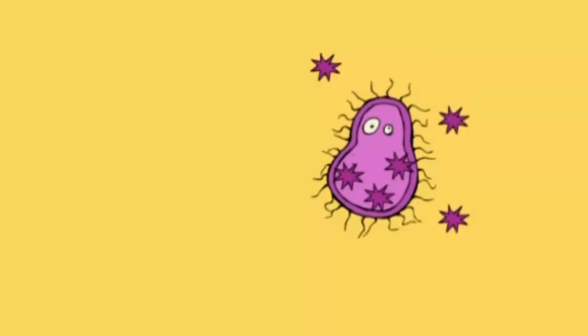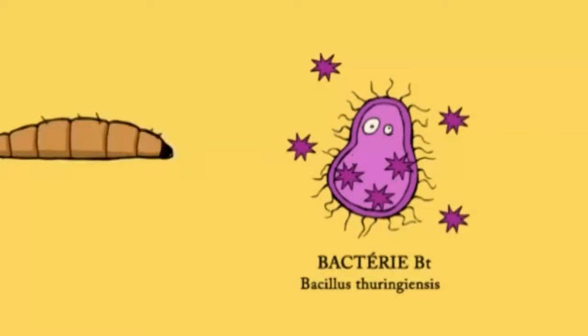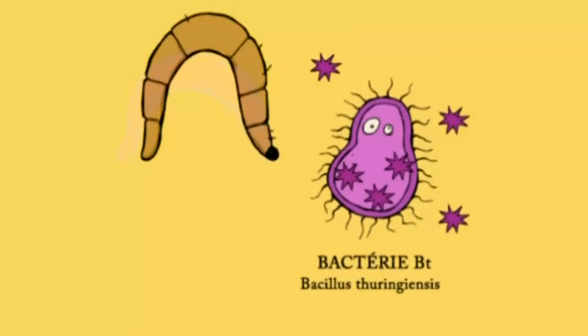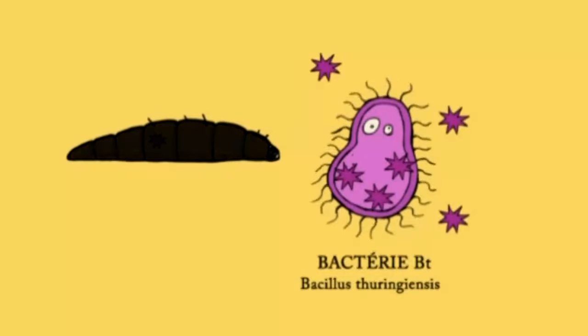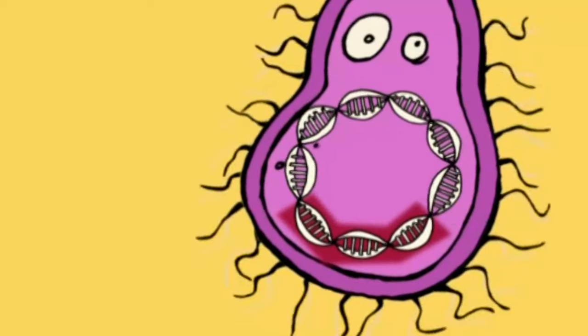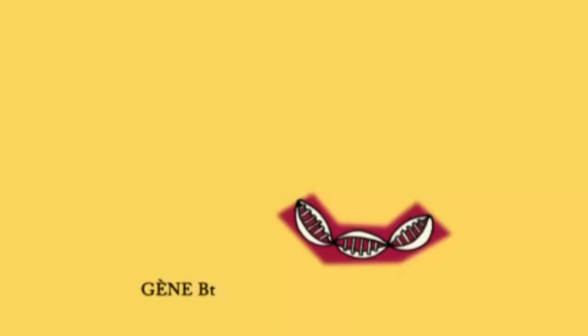En fait, c'est une bactérie insecticide utilisée par certains agriculteurs. Cette bactérie fabrique des protéines toxiques pour la pyrale. On prend le gène correspondant à cette protéine toxique.